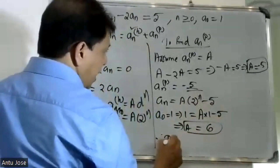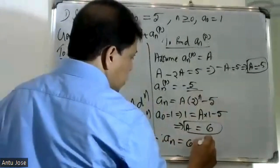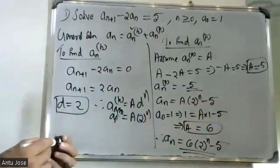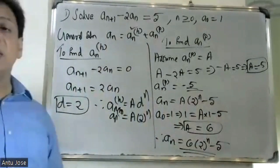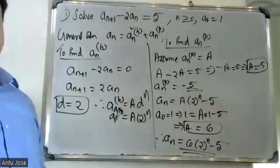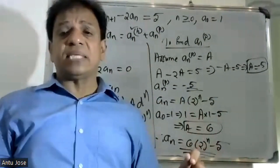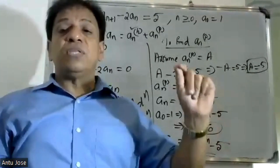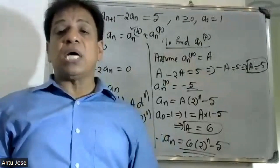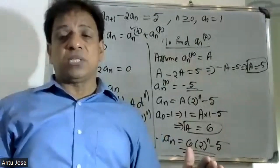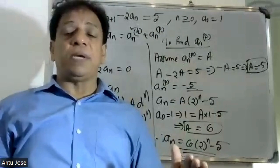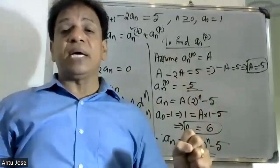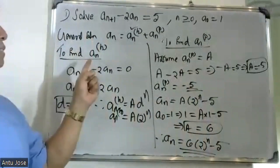Therefore the final solution is a(n) equals 6 into 2 raised to n minus 5. Verification: a(n+1) minus 2a(n) equals 6 into 2 raised to n plus 1 minus 2 into 6 into 2 raised to n minus 5, confirming the answer.